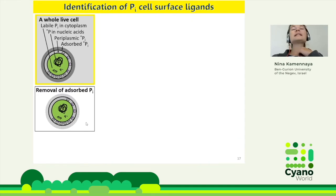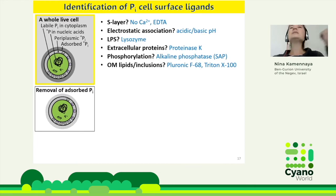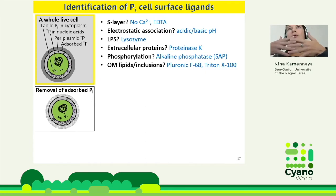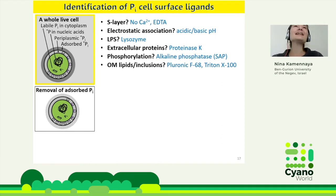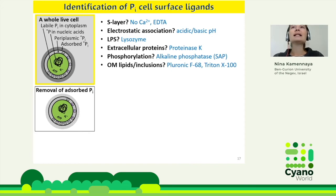We hypothesized the buffer might be at the cell surface. We investigated by: depleting medium of calcium and adding EDTA to destabilize the S layer; washing cells with basic or acidic solutions; adding lysozyme to destabilize LPS; adding proteinase K to destroy the S layer and extracellular proteins; adding alkaline phosphatase to dephosphorylate surface molecules; and adding detergents — pluronic and Triton — to destabilize phospholipids. I tested all these treatments and measured the percentage of radioactive label removal from live cells.